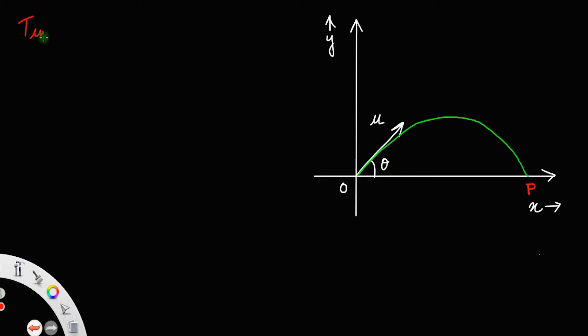This term time of flight, represented by t subscript f, basically means the time taken by the projectile to come back to the same horizontal level from where it is projected.